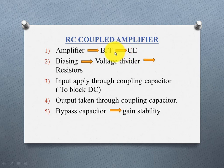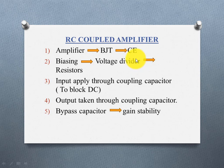Here we use BJT in the Common Emitter configuration. In Common Emitter configuration, input is applied to the base and output is taken from the collector. For the RC Coupled Amplifier, the BJT is used in the Common Emitter configuration — that is the first point.